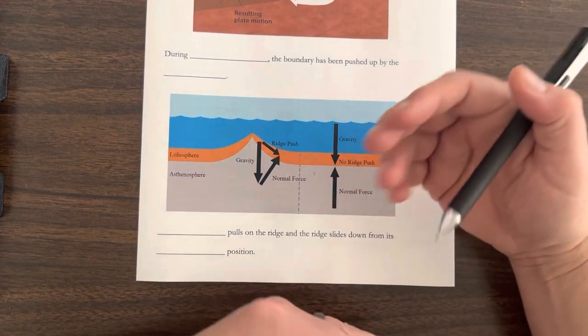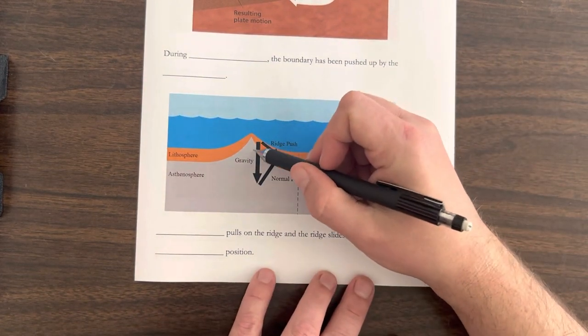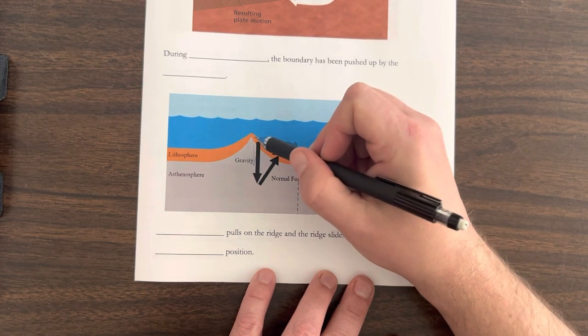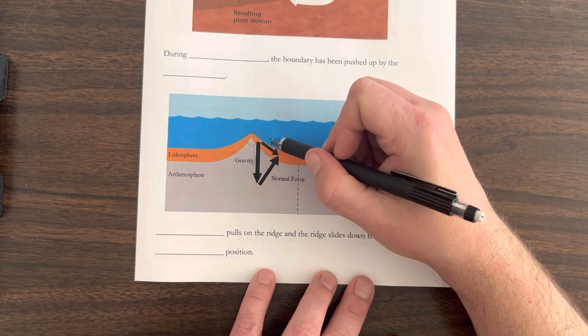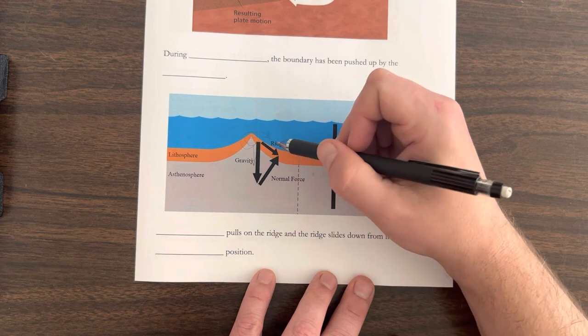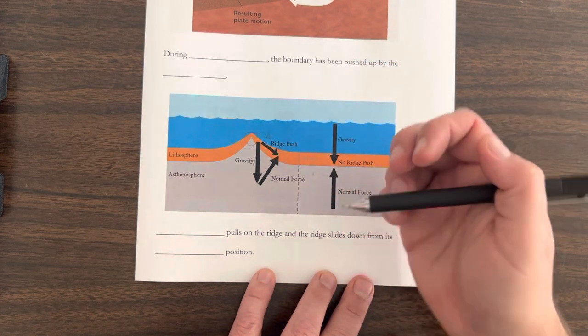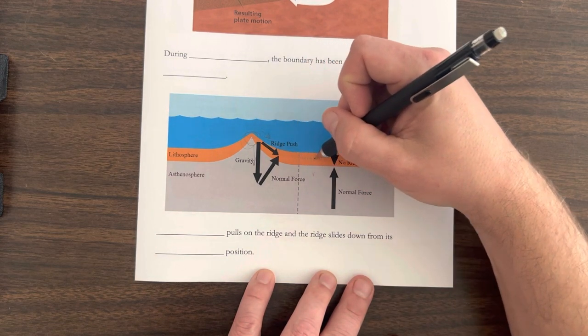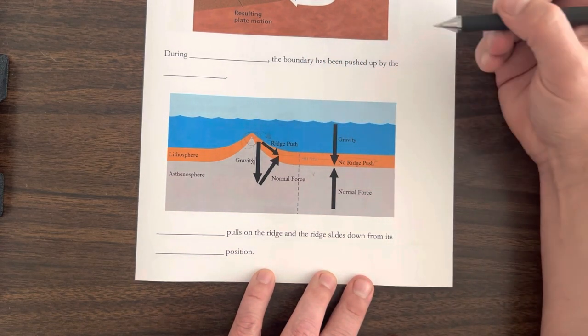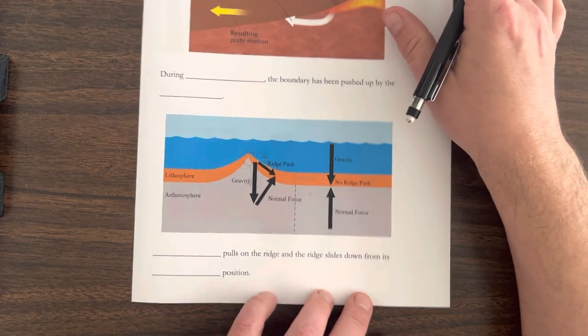And you can see that here. This is exaggerated, but you see gravity pulling down. This ridge is a little bit higher. And now it's going to start sliding down just because of gravity. And this slide pushes the whole plate. Okay, that's ridge push.